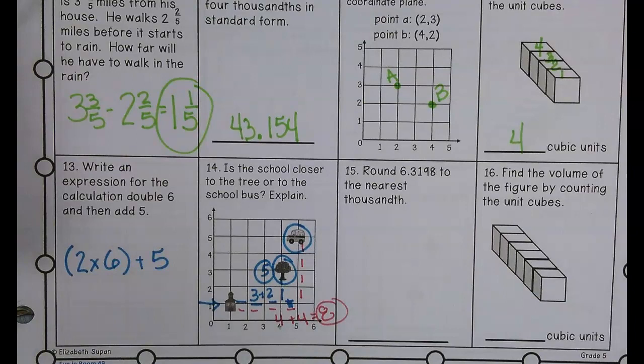We need to round 6.31988 to the nearest thousandth place. So we're rounding to the nearest thousandth place.